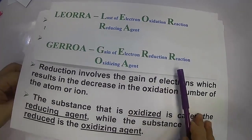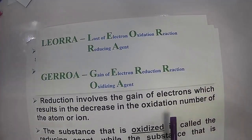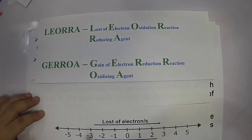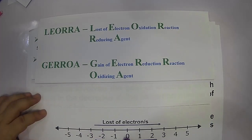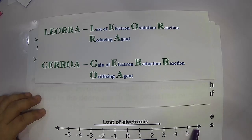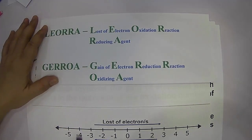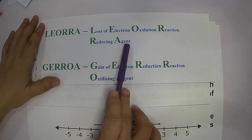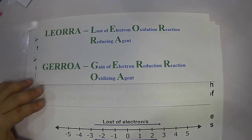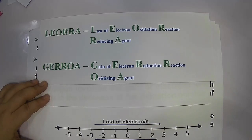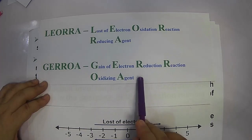We can apply the number line to determine loss or gain based on oxidation number changes from reactant to product. If there is a loss of electron — meaning the oxidation state goes from lower to higher — you are going to the right of the number line, so you undergo oxidation. If you gain electron, going from positive to negative — to the left of the number line — the atom or ion is the oxidizing agent.